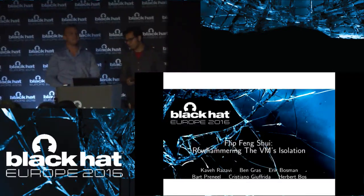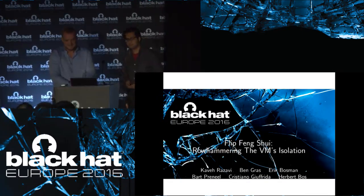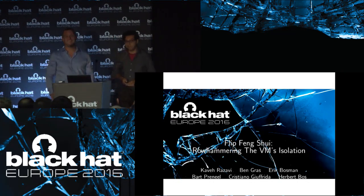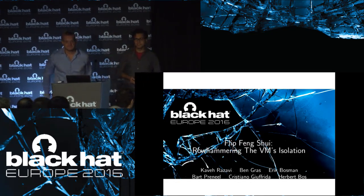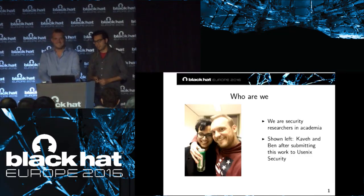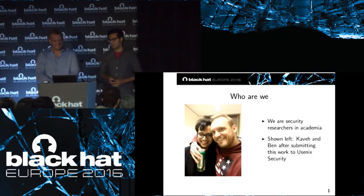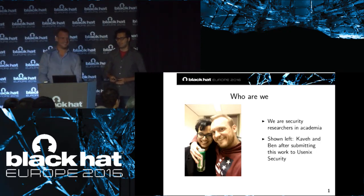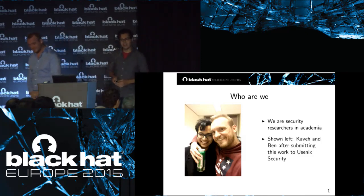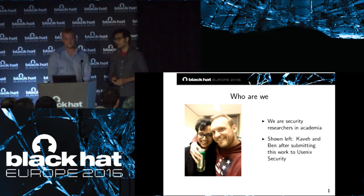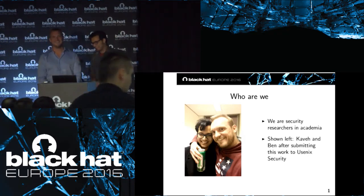Hello everyone, welcome to one of the first briefings of this year's Black Hat. We're going to talk about Flip Feng Shui — a new exploitation vector we've come up with. After this talk, you will know how to use Flip Feng Shui to break VM isolation using Rowhammer. I'm Kaveh, here is Ben Gras, and we are security researchers in academia. This photo is from right after we submitted the Flip Feng Shui work to Usenix for the first time, which is why we look so happy after a few weeks of work.